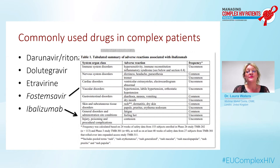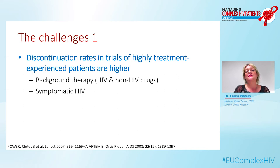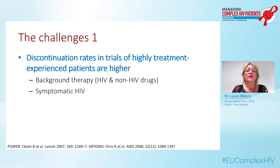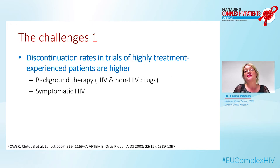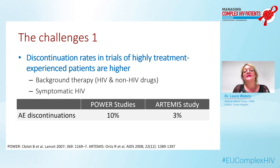The first challenge is that if you look at trials in highly treatment-experienced patients to get an idea of toxicity, you will see that discontinuation rates are higher than in earlier-line studies. That's going to be driven by background therapy — in treatment-experienced studies, background therapy usually includes more drugs — and for people with advanced HIV, they're more likely to be on other medications for other conditions and more likely to have symptomatic disease, which complicates interpretation of side effects. As an example, darunavir was studied in POWER and ARTEMIS.